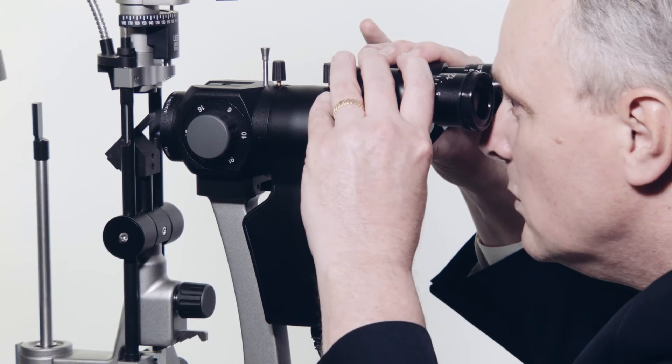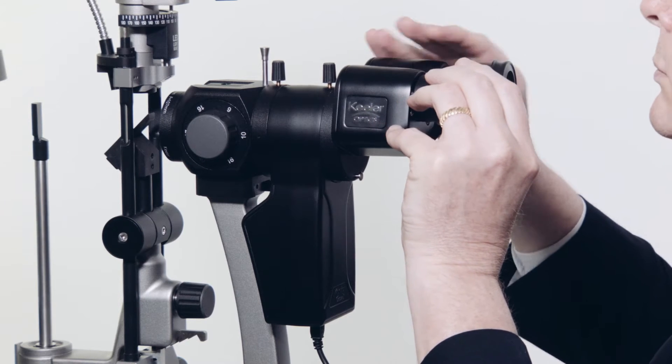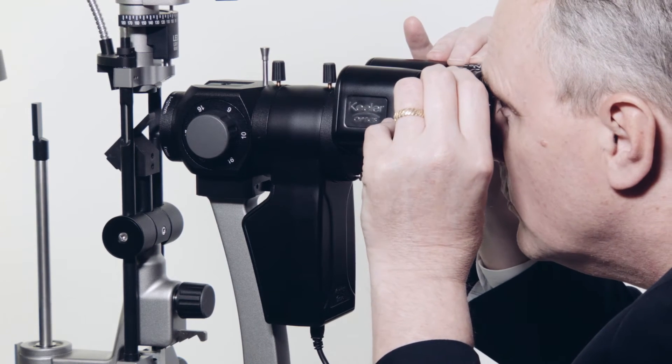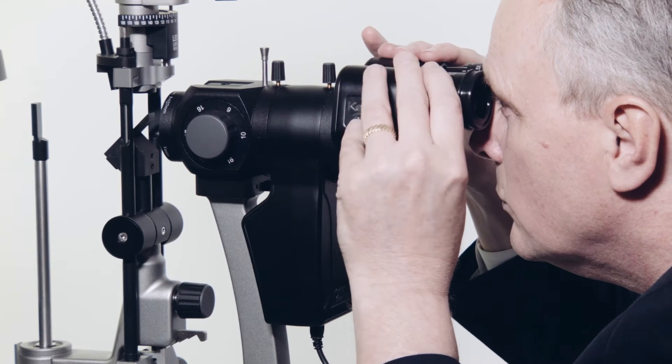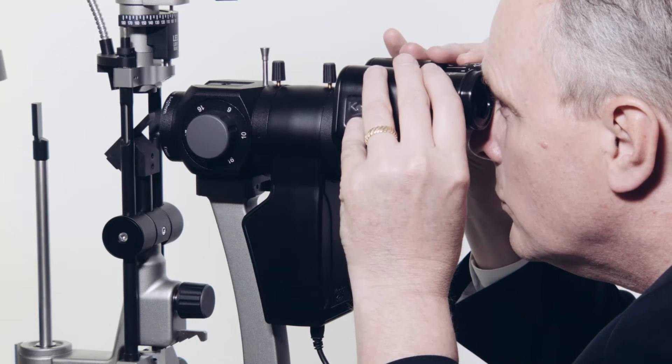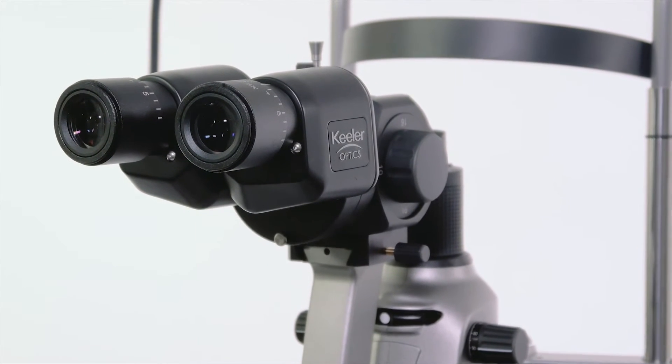Before using the slit lamp for examination, adjust the eyepiece's pupillary distance. Start with one eyepiece, rotate it inwards or outwards until a single fused image can be seen. Then repeat for the other eyepiece. The PD ranges from 49mm to 77mm.